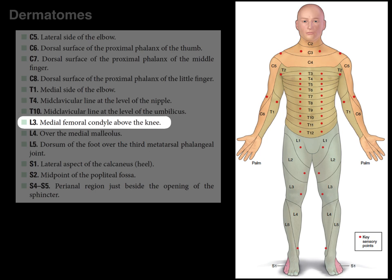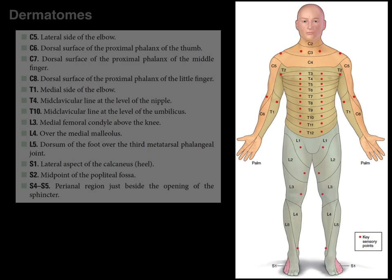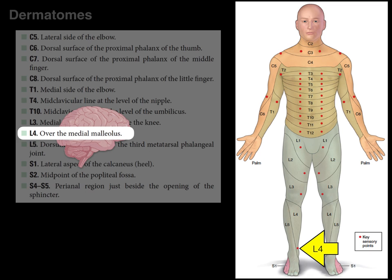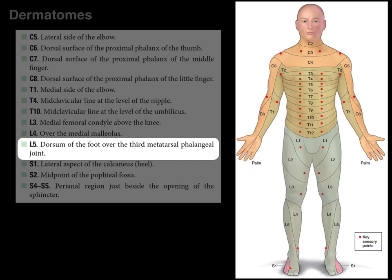L3 is tested at the medial femoral condyle, just above the knee. To test the L4 dermatome, use the skin overlying the medial malleolus — I remember this because 'medial malleolus' has four L's in it, for L4. The L5 dermatome is tested by touching the skin on the dorsum of the foot over the third metatarsal phalangeal joint — or think of it as the skin of the foot that touches your shoelaces.